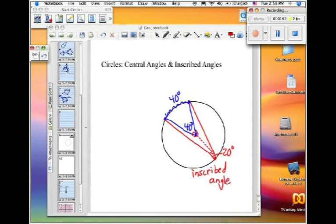An inscribed angle is always half the measure of the arc that it creates. So, the central angle is 40 degrees, resulting in a 40 degree arc. The inscribed angle is 20 degrees, which is half of it.